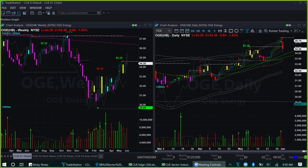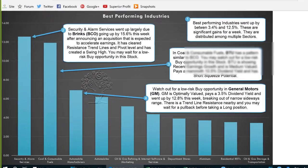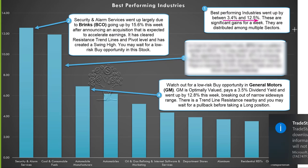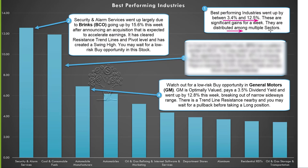Let's now move to industry analysis. We will find some interesting stocks from this top-down analysis. At sector and market level, forces tend to neutralize each other — too many forces, some pushing stocks up and some pushing down. At the industry level, stocks tend to move more homogeneously. We are looking at the ten best-performing industries of this week. The best-performing industries went up by between 3.4% to 12.5% — significant gains for a week. They are distributed among multiple sectors. Securities and Alarm Services is the best-performing industry.